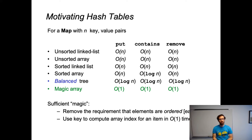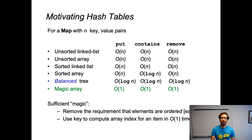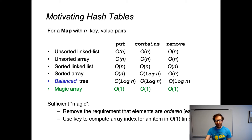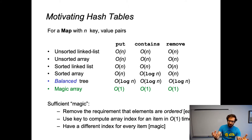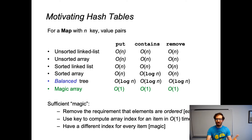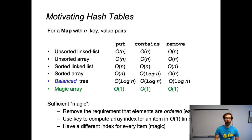We're also going to use the key of our key-value pairs to compute an array index where that key-value pair will be stored, in constant time. This is going to be one of our main focuses — this process of hashing, which is turning a key into an array index. This is going to be doable. The real sort of magic, more art than science, is how do you have a different index for every key-value pair that we want to store in the hash table.